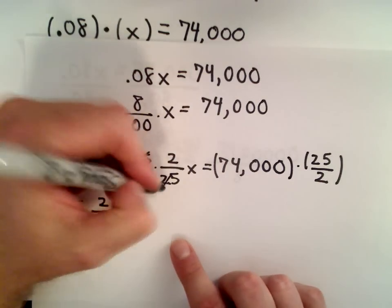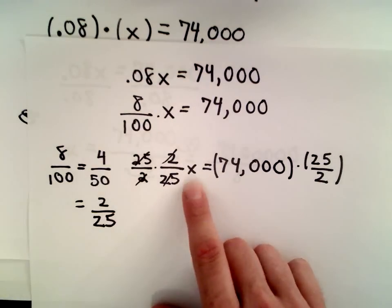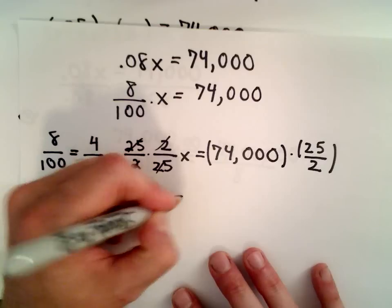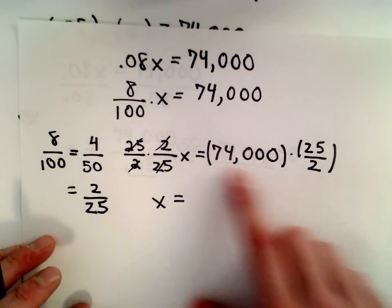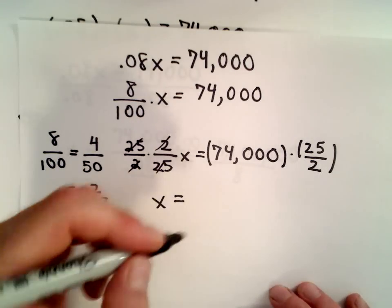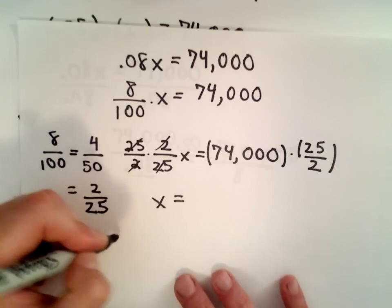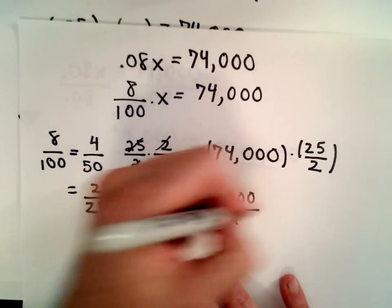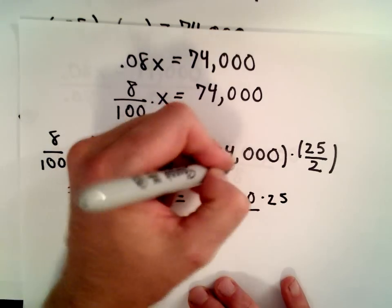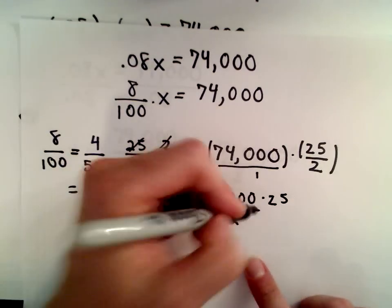Okay, so on the left side, the 25's cancel, the 2's cancel, we're left with just x. Well, let's see, 74,000 divided by 2, what would that be? Let's see, so 74,000 divided by 2.